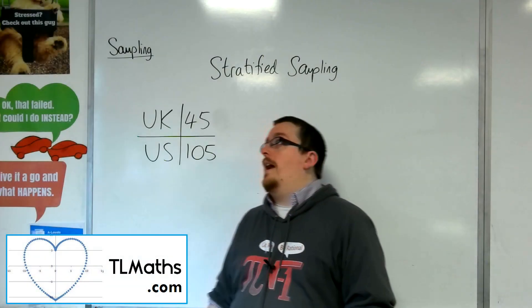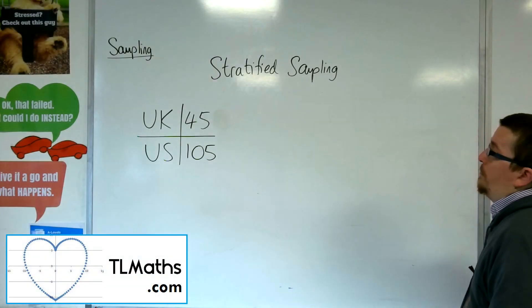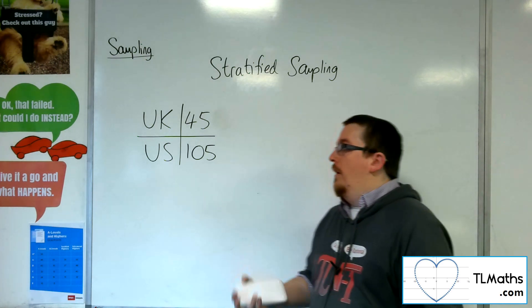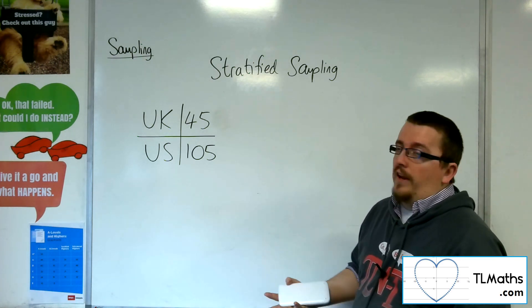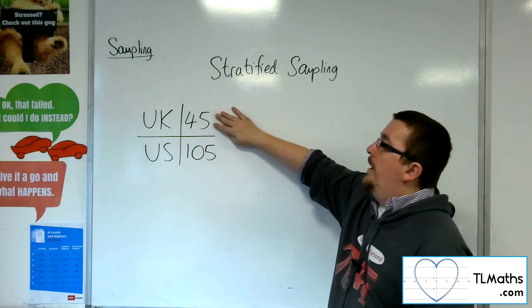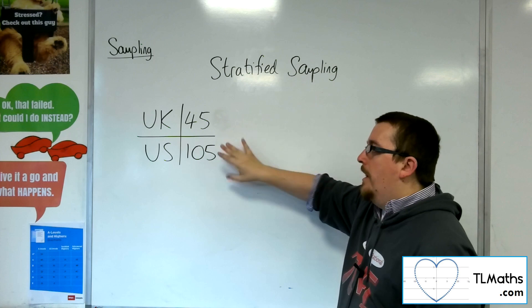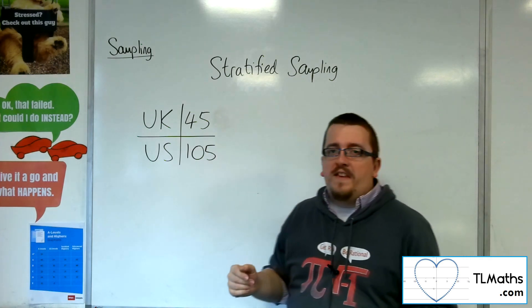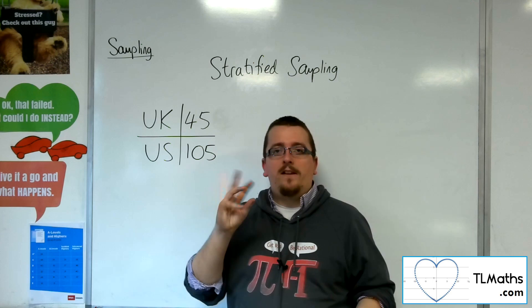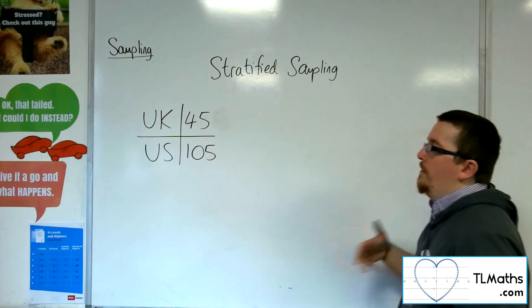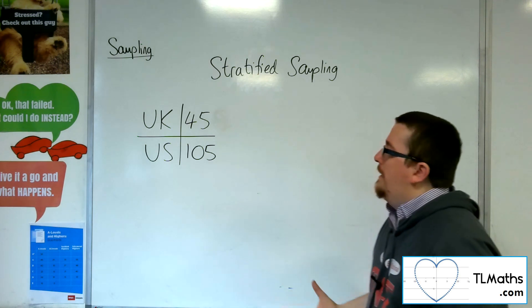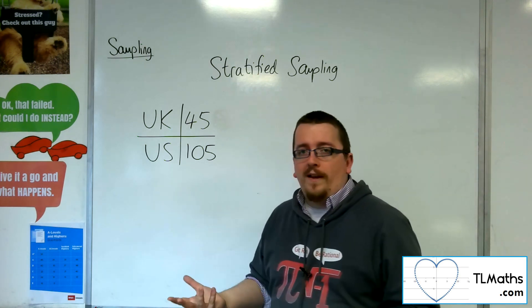Let's say I wanted to perform a stratified sample. In this context problem, I've got 45 people in a room who were born in the UK and 105 people who were born in the US. These are distinct categories — no one could be born in both the UK and the US, so they don't overlap.